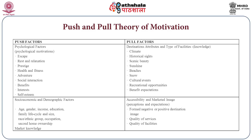Push factors as psychological motivations include escape, rest and relaxation, prestige, health and fitness, adventure, social interaction, entertainment, and self-esteem. Pull factors include destination attributes — characteristics of the destination, types of facilities available, and knowledge offered to tourists. Climate draws people to hill stations in summer. Historical sites attract those appreciating history. Scenic beauty, sunshine, beaches, snow, cultural events, and recreational opportunities are all pull factors.